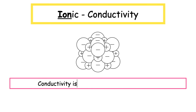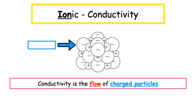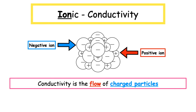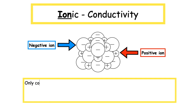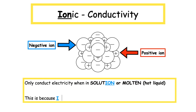They have high melting points and boiling points, and this is because the strong ionic bonds need to be broken. Conductivity is the flow of charged particles. The charged particles in ionic substances are ions — both positive and negative — which can be found in the lattice structure. However, ionic substances are solid at room temperature, and particles in a solid are unable to move. So in the solid state, ionic substances do not conduct electricity. However, they can conduct electricity when in solution or when molten, because the ions are free to move.